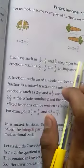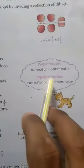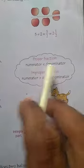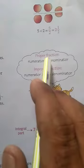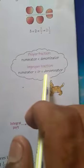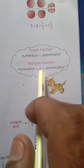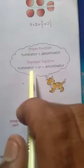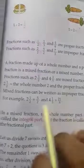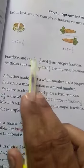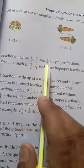Now we will understand proper, improper, and mixed fractions. Proper fraction: जब denominator, numerator से बड़ा होता है, तब वो proper fraction होता है। Fractions such as 1 upon 2, 2 upon 3, and 5 upon 9 are proper fractions — क्योंकि इनमें denominator, numerator से बड़ा है।